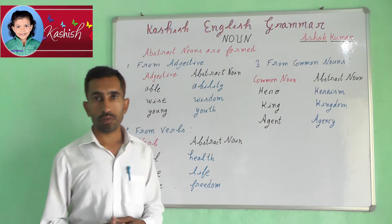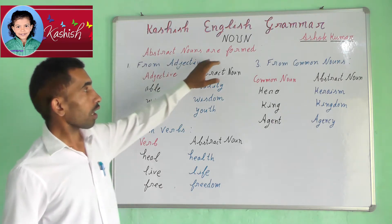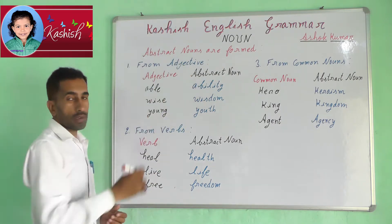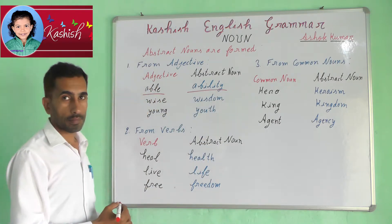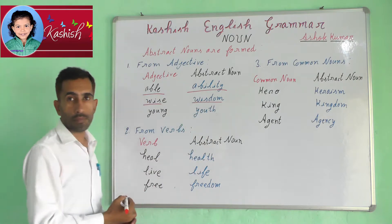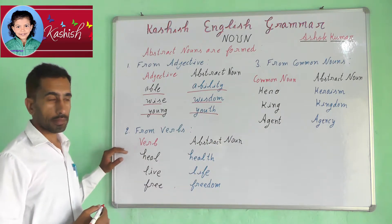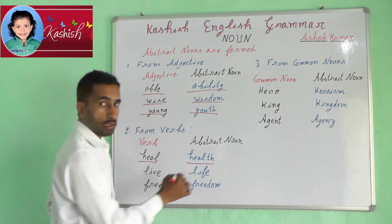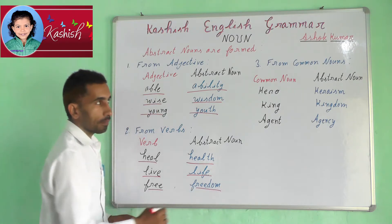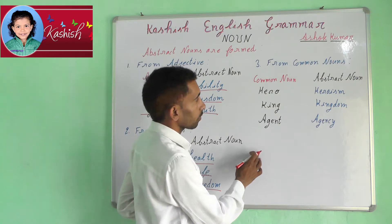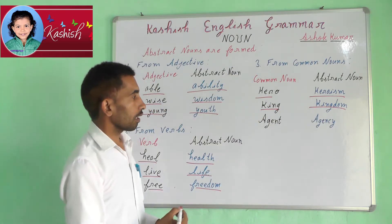There are different forms to create abstract nouns. Abstract nouns are formed from adjectives — for example, Able/Ability, Wise/Wisdom, Young/Youth. From verbs — Heal/Health, Live/Life, Free/Freedom. From common nouns — Hero/Heroism, King/Kingdom, Agent/Agency.